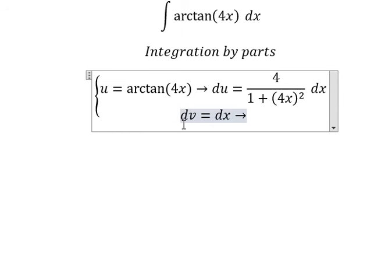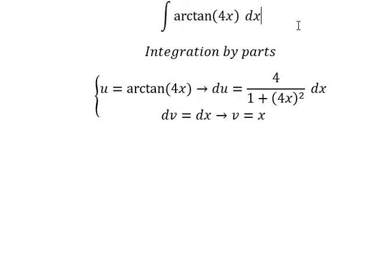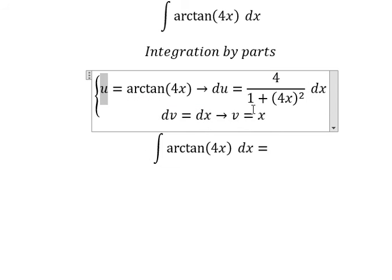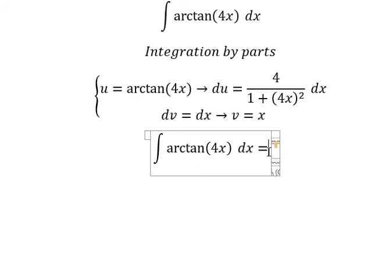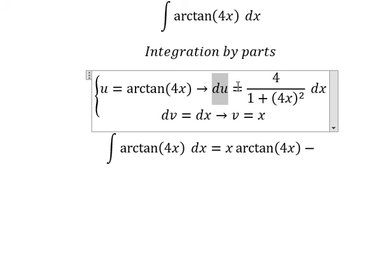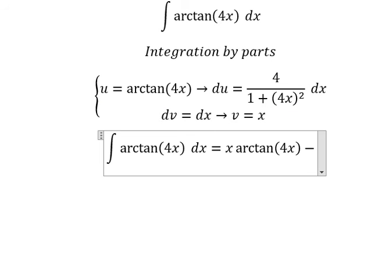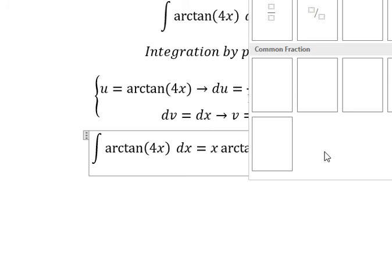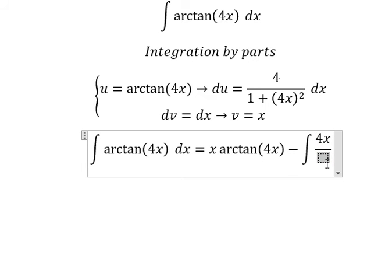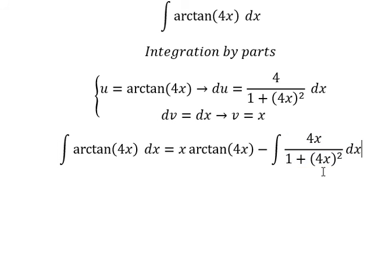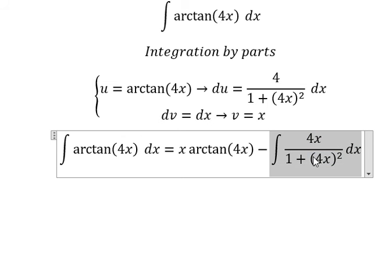For the integration of dv, we have v equals s. So we have u multiplied by v, minus the integral of v du, which gives us the integral of 4s over (1 plus 4s squared). Now we need to focus on solving this remaining integral.